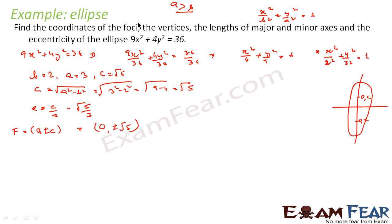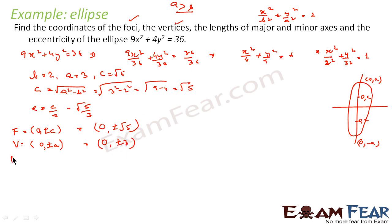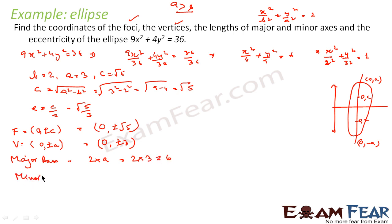Vertices are at (0, ±A) = (0, ±3). Length of major axis = 2A = 2 × 3 = 6. Length of minor axis = 2B = 2 × 2 = 4. So we have found all the required values for this ellipse.